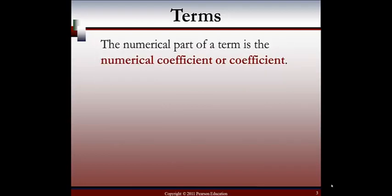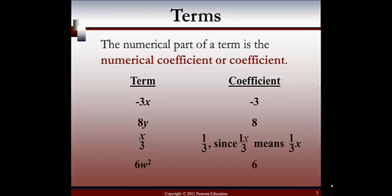The numerical part of the term is the numerical coefficient, or simply the coefficient. Our term is negative 3x, and the coefficient is negative 3. Our second example, the term is 8y, so the coefficient is just 8. The third example is a little bit harder: x over 3. The coefficient in that case would be 1 third, because x over 3 is the same thing as 1x over 3, which means 1 third times x. So that's something to really make note of, because that can get a little confusing.